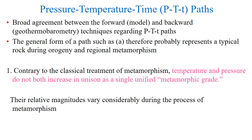There is broad agreement between the forward or model type progression and the backwards technique regarding P-T-t paths. We assume that the general form of a path, such as path A, therefore probably represents a typical rock during orogeny and regional metamorphism. If this assumption is correct, the shape of the typical P-T-t path has some instructive ramifications.